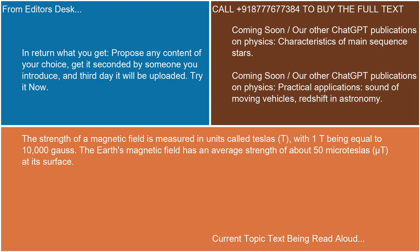The strength of a magnetic field is measured in units called Teslas (T), with 1 T being equal to 10,000 Gauss. The Earth's magnetic field has an average strength of about 50 microteslas (µT) at its surface.